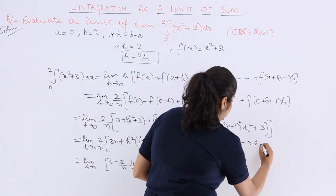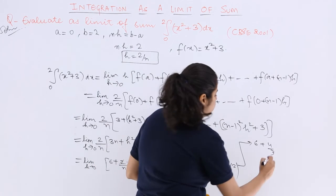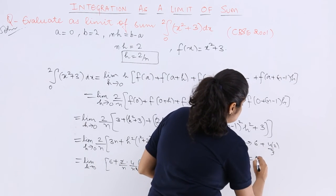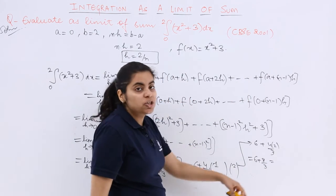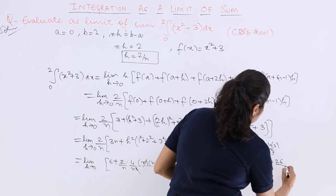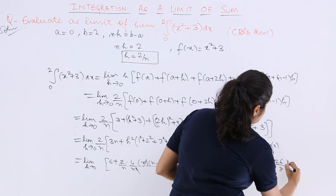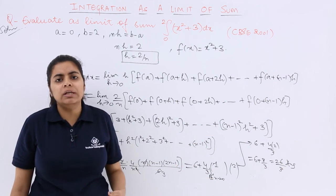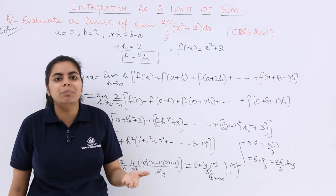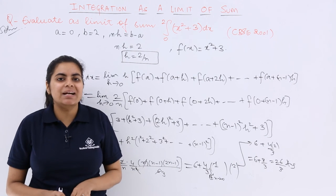So it is 6 plus 8 upon 3. What should be the answer? It should be 26 upon 3, and that is the answer to this question. Please pay attention how to solve it. A small mistake can lead to a big blunder. So keep practicing, keep learning.